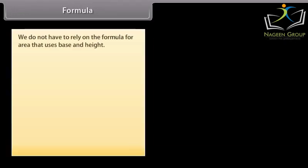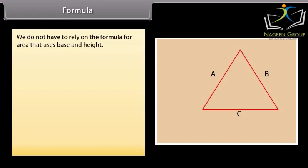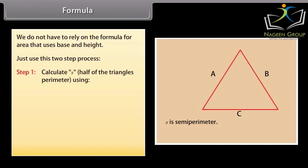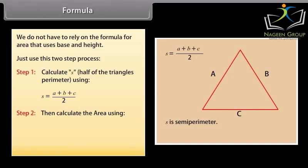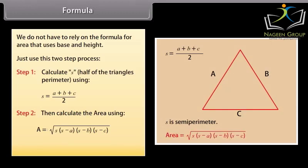We do not have to rely on the formula for area that uses base and height. The figure illustrates the general formula where S represents the semi-perimeter of the triangle. We use a two-step process. Step 1: Calculate S, half of the triangle's perimeter, using S = (A + B + C) / 2. Step 2: Calculate the area using A = √(S × (S−A) × (S−B) × (S−C)), where A, B and C are the sides of the triangle.